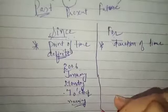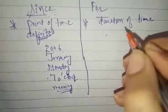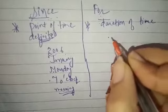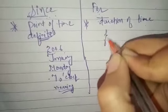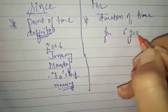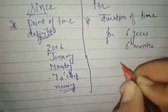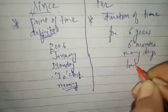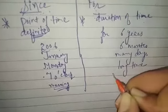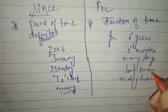And what about for? For will be used for duration of time. For example, I say for how many years have you been studying in this school? You say for 6 years, for 6 months, for many days, for long time, for many hours. These are the examples we will use for.